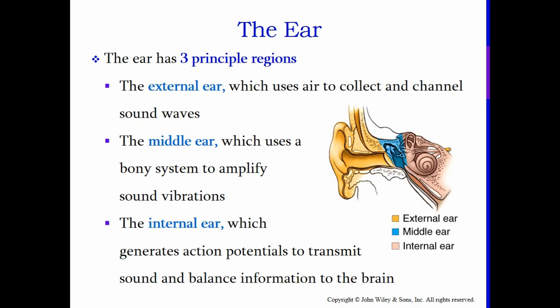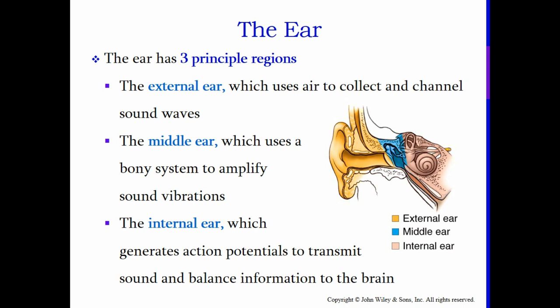The ear has three principal regions: the external ear, whose job is to collect and channel sound waves; the middle ear, which uses a bony system to amplify sound vibrations — you have three very small bones in your middle ear; and then the internal ear, which generates action potentials to transmit sound and balance information to the brain.